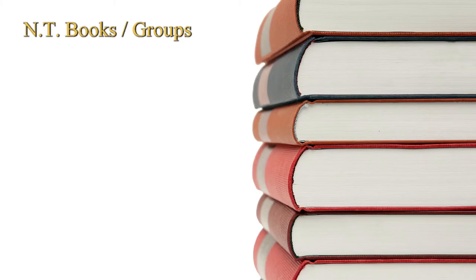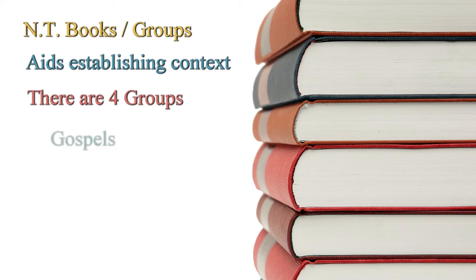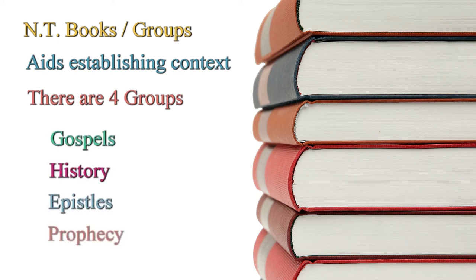We can arrange the 27 books of the New Testament into groups as we did with the Old Testament, and this will assist us later in understanding, establishing context, and the relevant history. There are four groups, which are the Gospels, History, Epistles, and Prophecy. Let's examine these groups more closely.